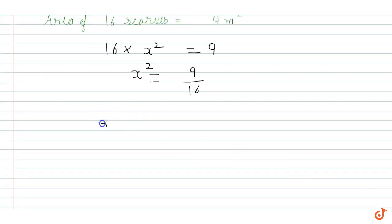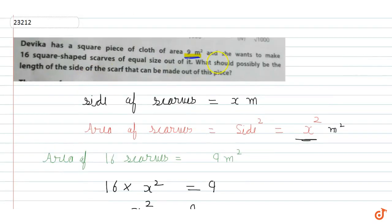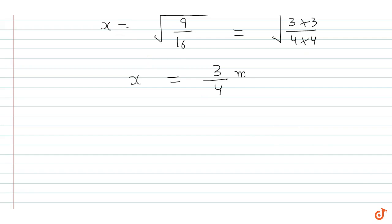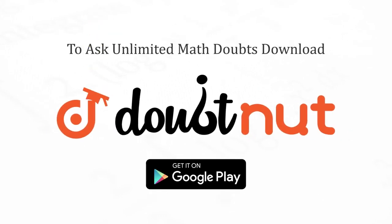So x is equal to square root of 9 by 16. Now 9 is equal to 3 into 3 and 16 is equal to 4 into 4, so square root of 9 by 16 is 3 by 4. So x is equal to 3 by 4 meter. The length of the side of the scarf is 3 by 4 meter. That is the answer.